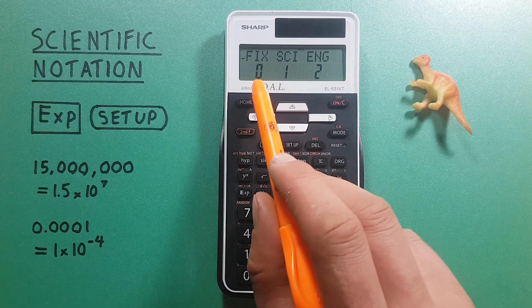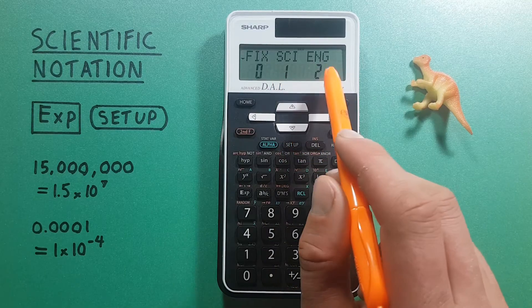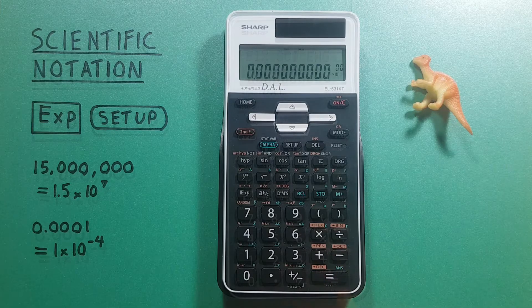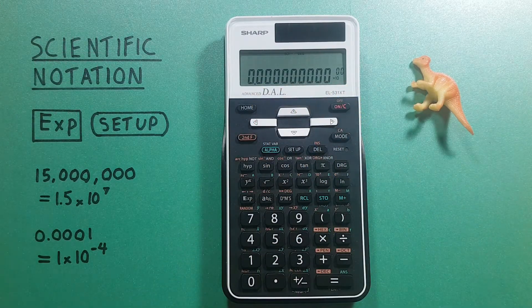That brings us to this menu: the fixed digits, scientific notation, or engineering. We'll go to the right once and select scientific notation and we get on the screen our values in scientific notation.